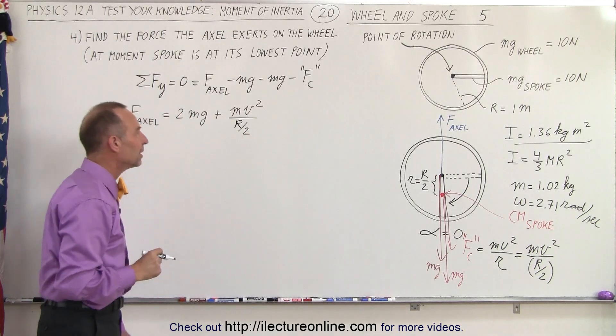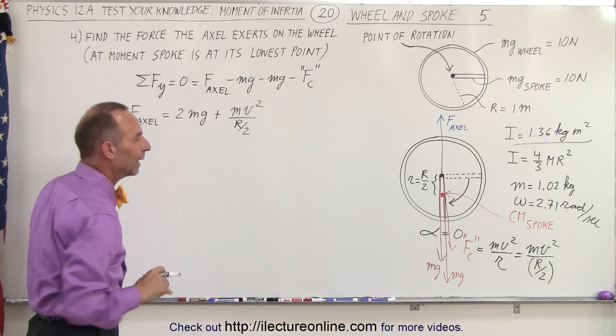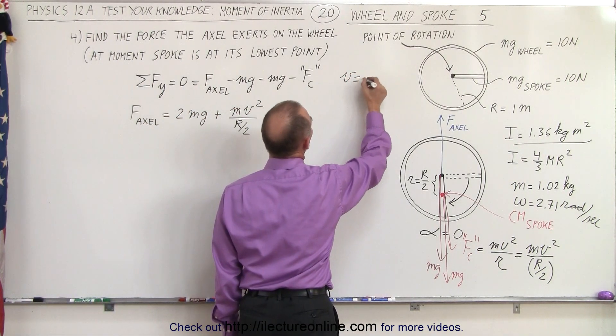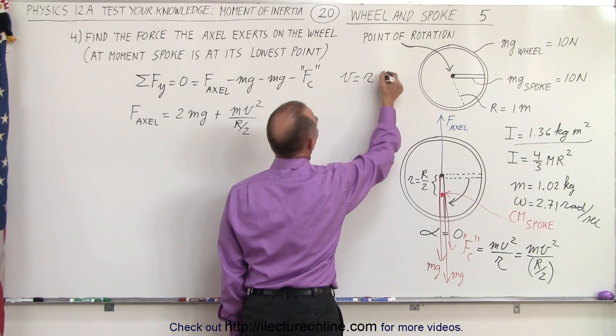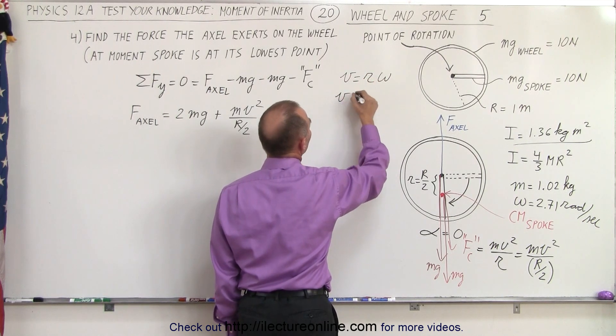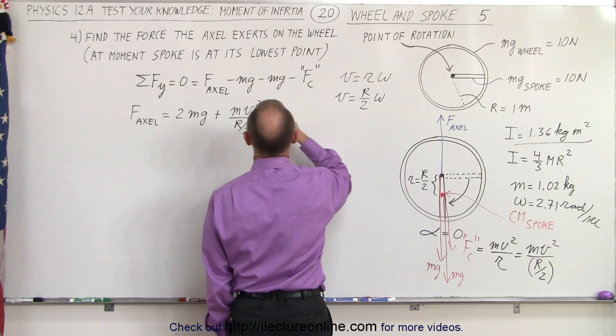We already solved for that radius, but now we need to find the relationship between omega and v. So we can say that v is equal to the radius r times omega, but in this case that would be r over 2, so v equals the full radius divided by 2 times omega, and that's what goes in here.